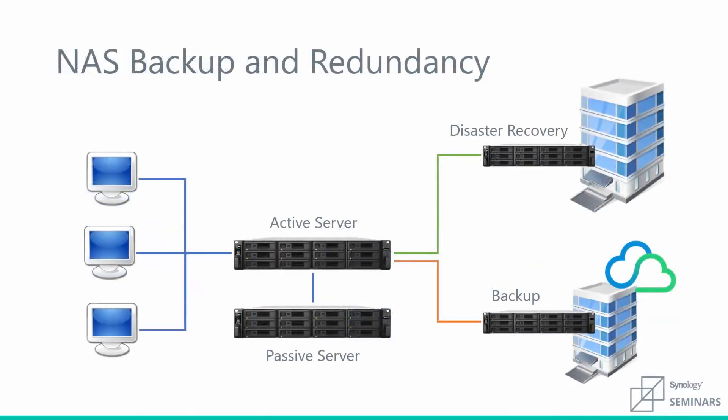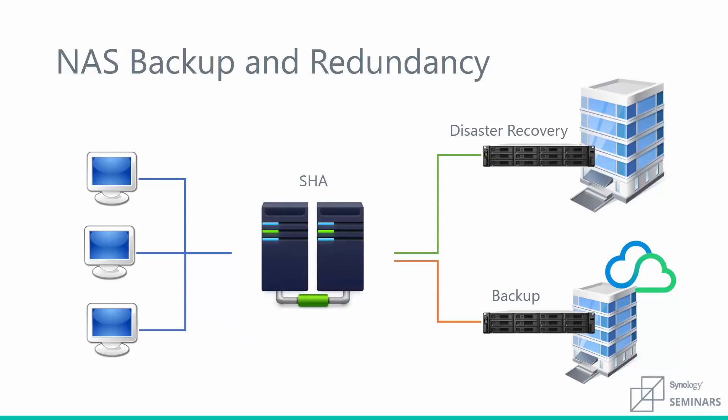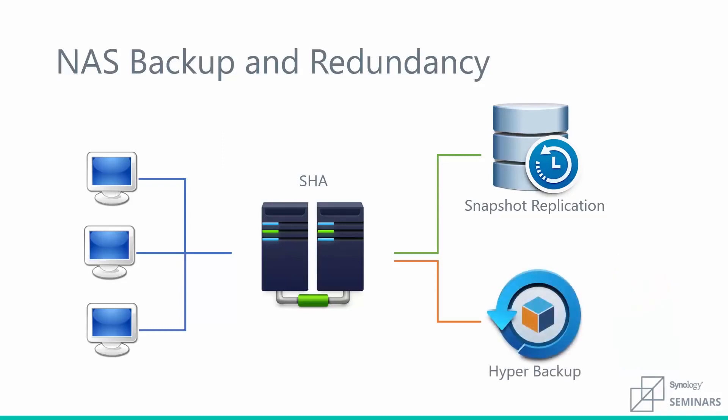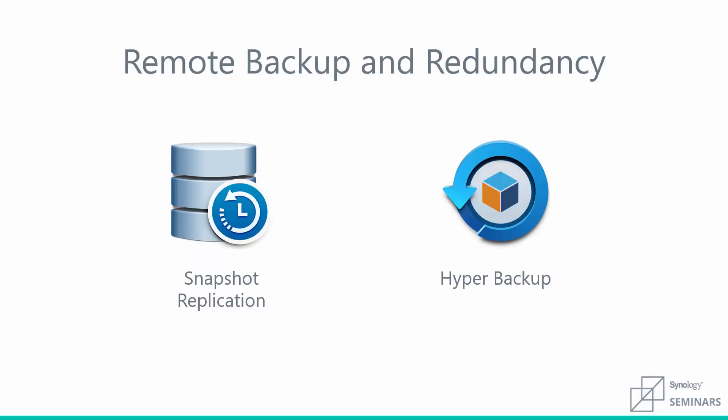That's been a look at how we can handle local redundancy with a high availability cluster. Now let's talk about backing your data up off-site. For disaster recovery, you'll be using snapshot replication, and for backup, you'll be using Hyper Backup. Let's dig into these two pieces of software a little bit more.